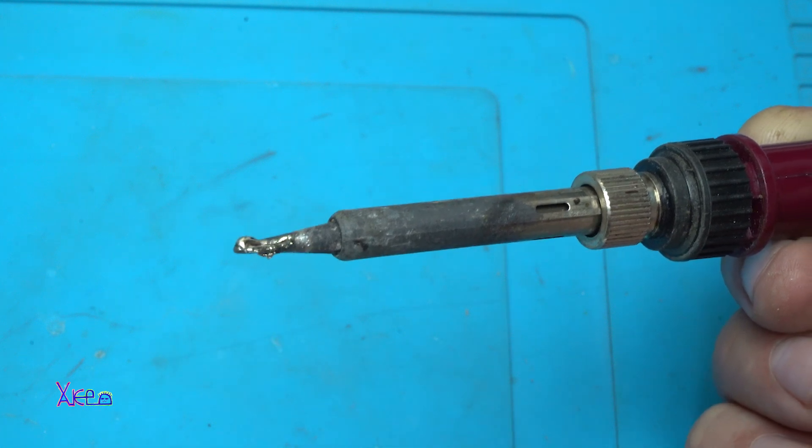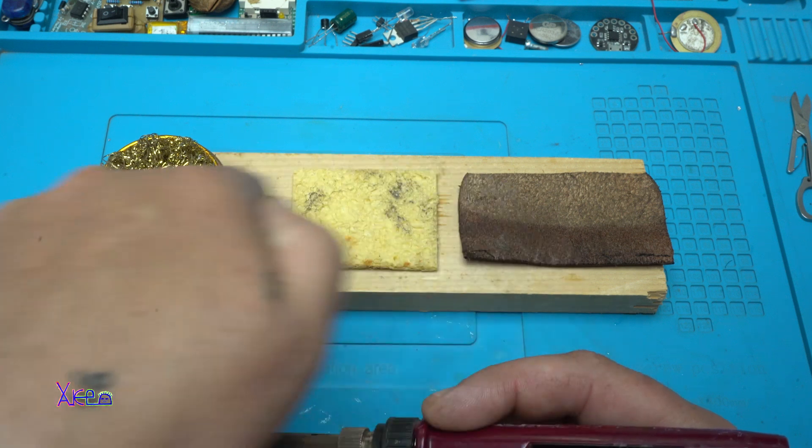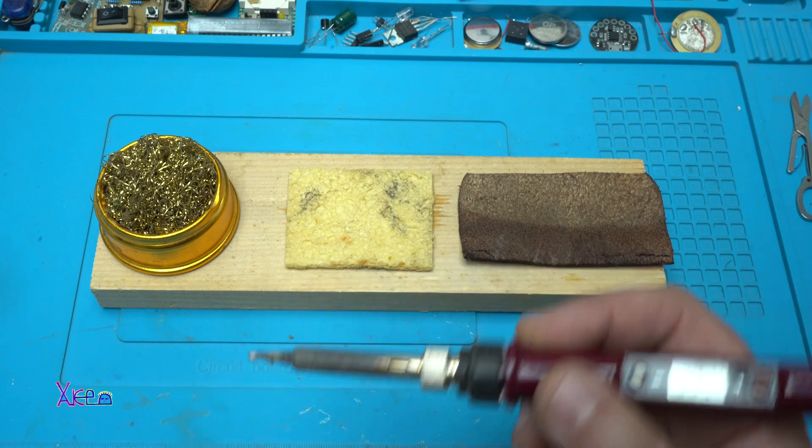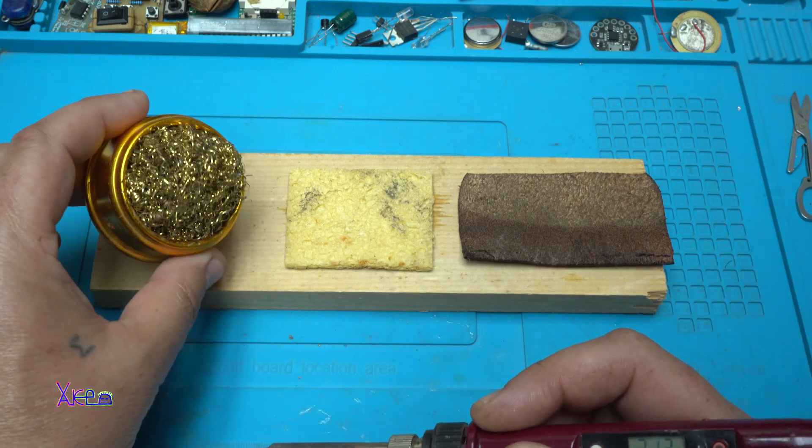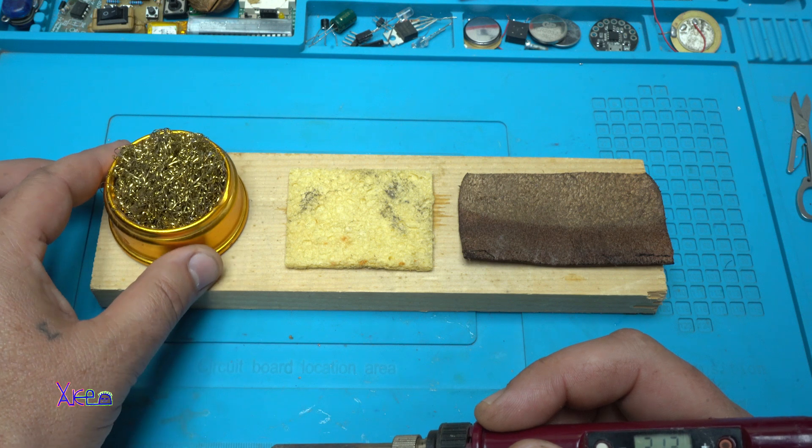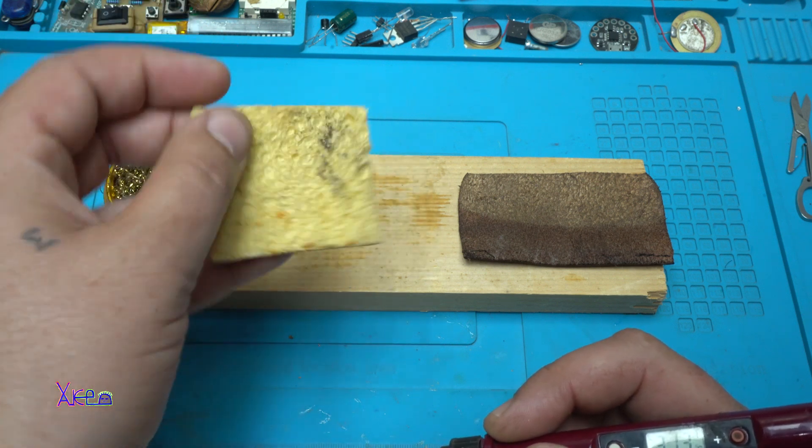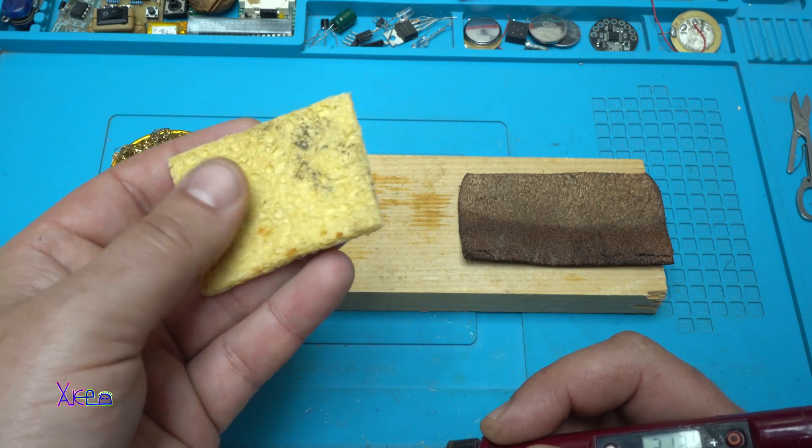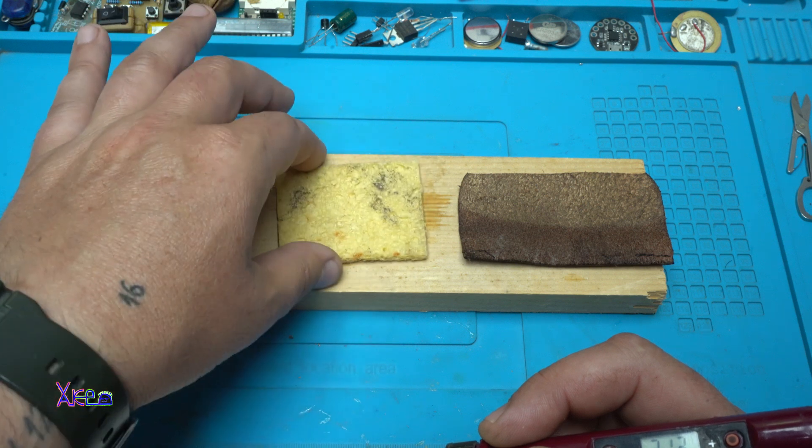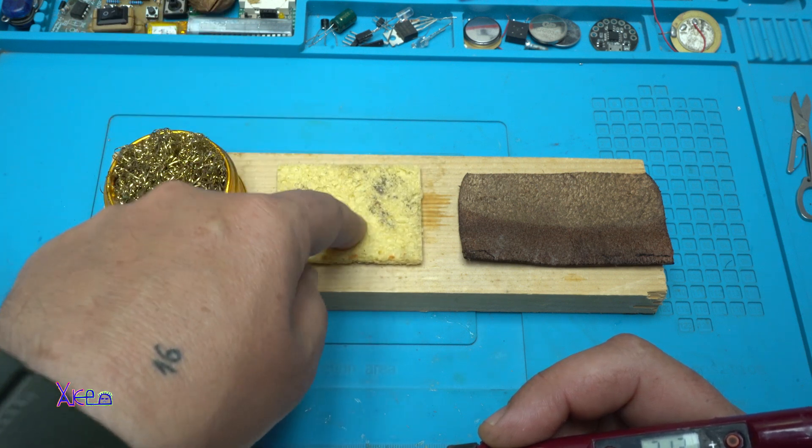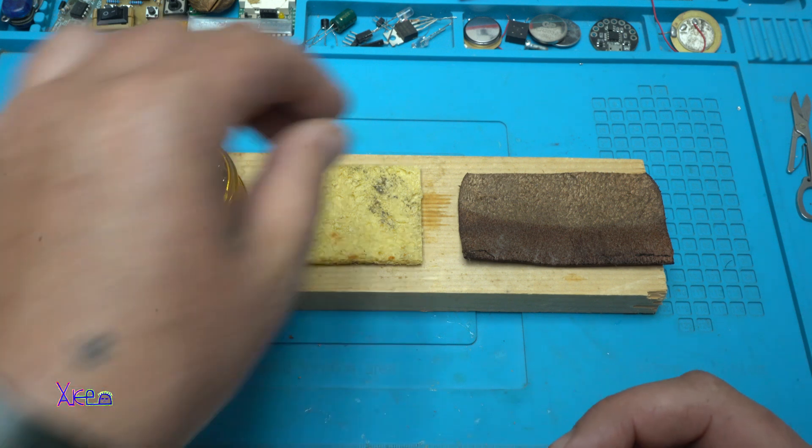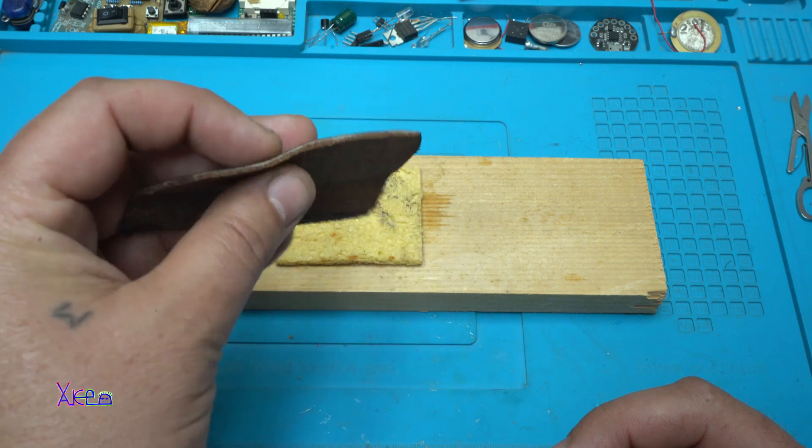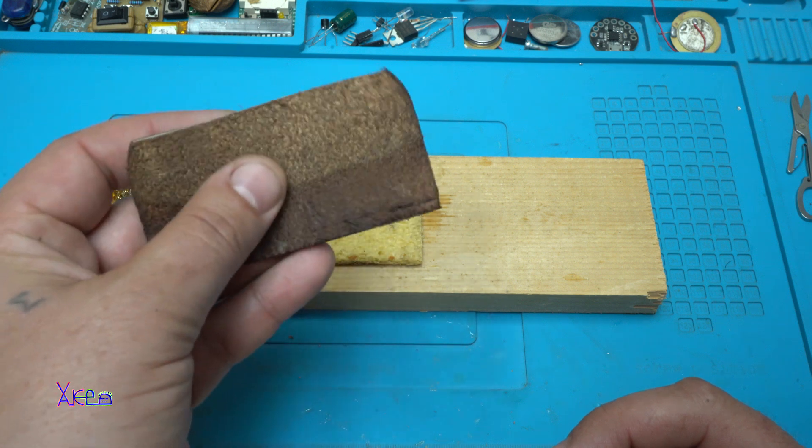So how to clean it? Here I have three different materials for cleaning the soldering tip. The first one is metal sponge. This is the most used. It's a wet sponge. And if you don't find this kind of material for cleaning the soldering iron, you can use real leather. But first you need to add some water.